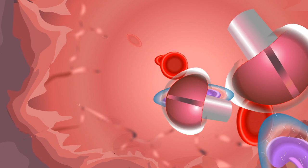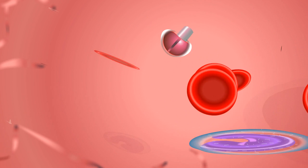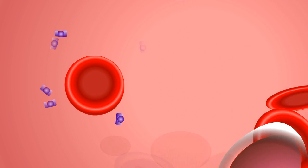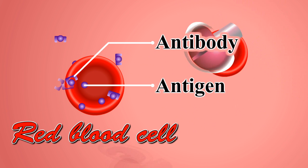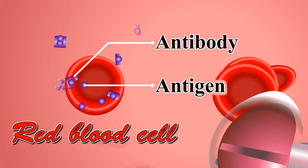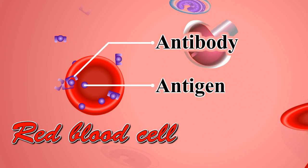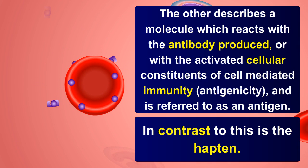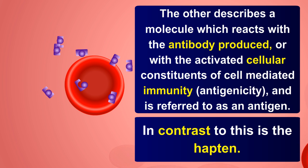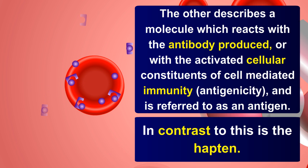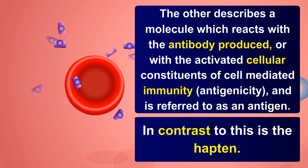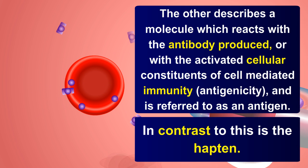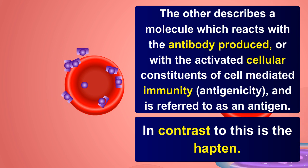The terms immunogen and antigen are often used synonymously. The first describes a molecule that provokes an immune response, i.e., immunogenicity, and hence it is called an immunogen. The other describes a molecule which reacts with the antibody produced or with the activated cellular constituents of cell-mediated immunity, i.e., antigenicity, and it is referred to as an antigen.